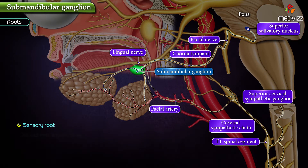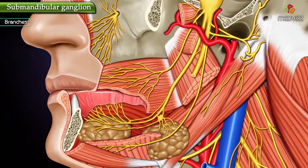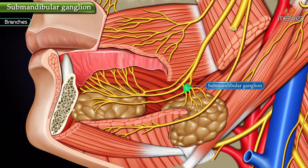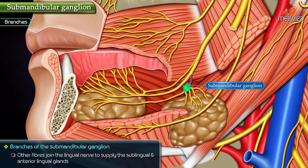Sensory root: it is derived from the lingual nerve. Branches: the branches of the submandibular ganglion are five to six branches which supply the submandibular gland. Other fibers join the lingual nerve to supply the sublingual and anterior lingual glands.